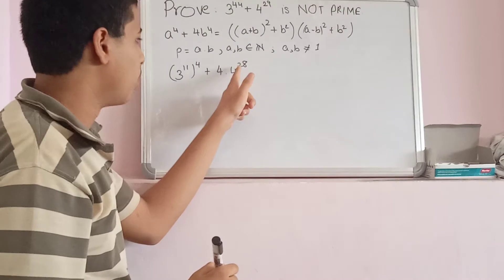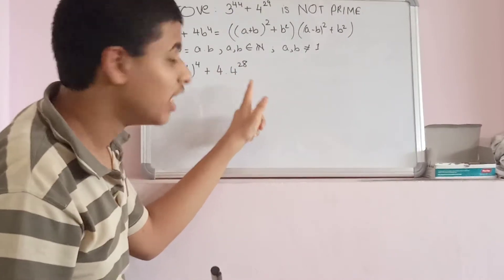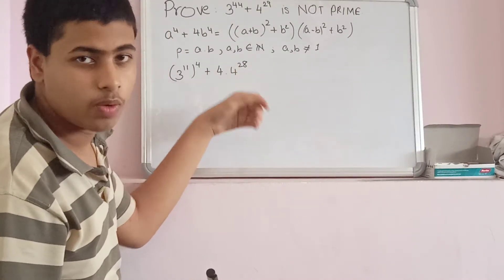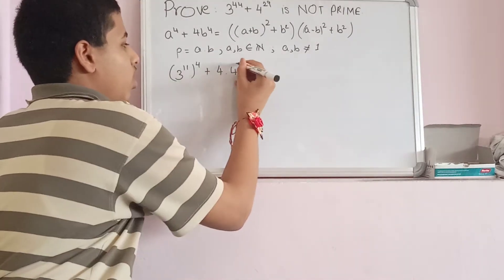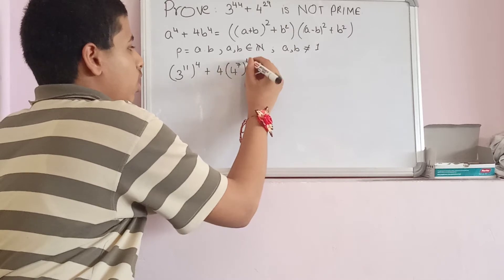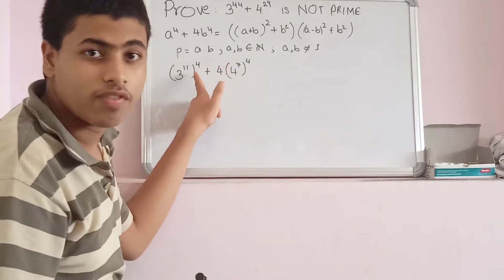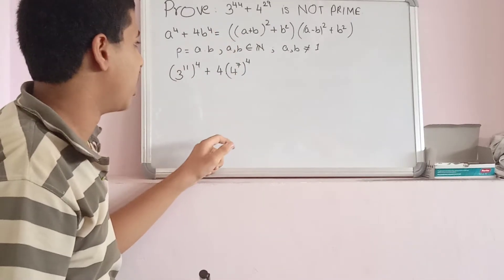That's cool. Because 4 to the power of 28 can be written as (4^7)^4. Now we can factor it in terms of the Sophie Germain identity.